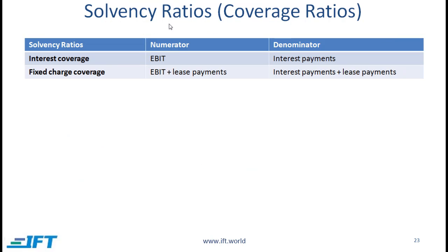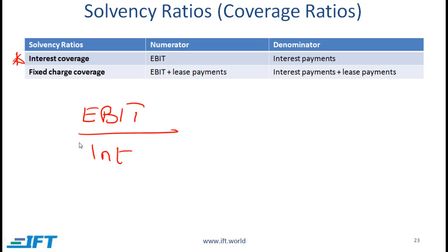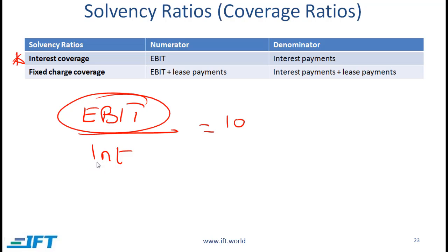An extremely important solvency ratio is the interest coverage ratio, which is operating income or earnings before interest and taxes divided by interest payments. This is called a coverage ratio because if this ratio, for example, is 10, that means your operating income covers the interest amount 10 times. Here, the higher the better. A high coverage ratio means that you are making a lot of operating income relative to the financial cost, which is interest in this case.